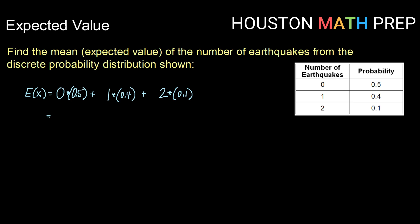Doing that multiplication: 0 times 0.5 is 0, plus 1 times 0.4 is 0.4, plus 2 times 0.1 is 0.2. Adding those up, I get an expected value of 0.6 earthquakes.